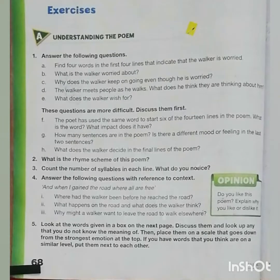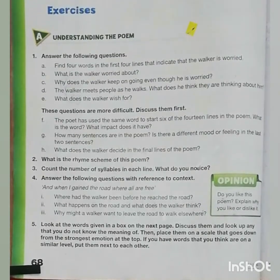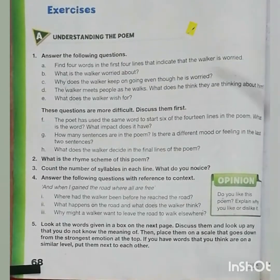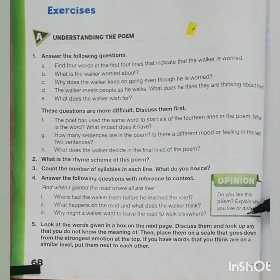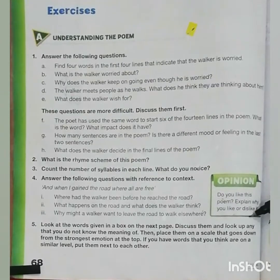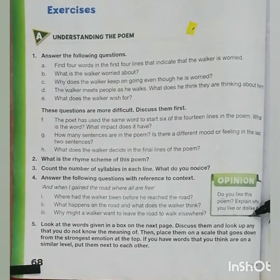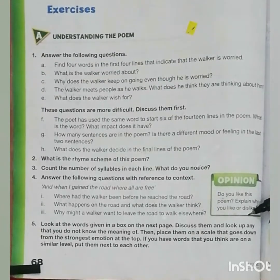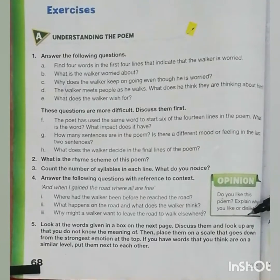So as you all know about the story of this poem, now move towards the exercise. Question number five. Look at the words given in the box on the next page. Discuss them and look up any that you do not know the meaning of. Then place them on a scale that goes down from the strongest emotion at the top. If you have words that you think are on the similar level, put them next to each other.